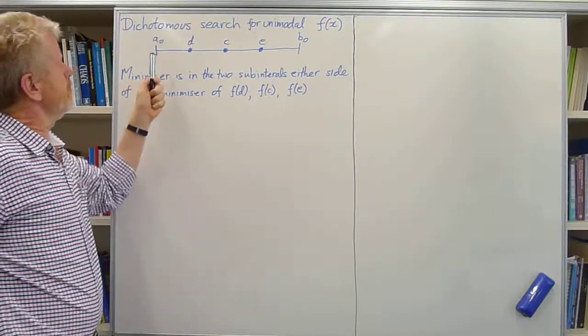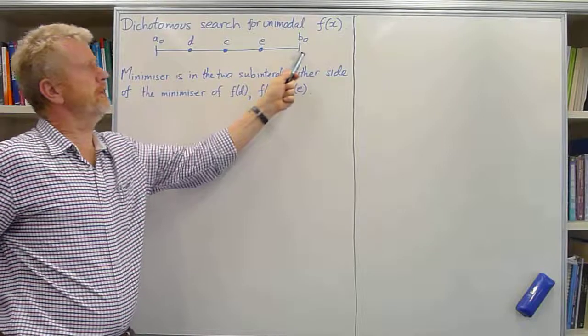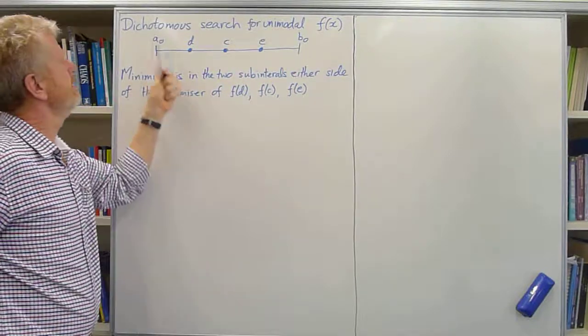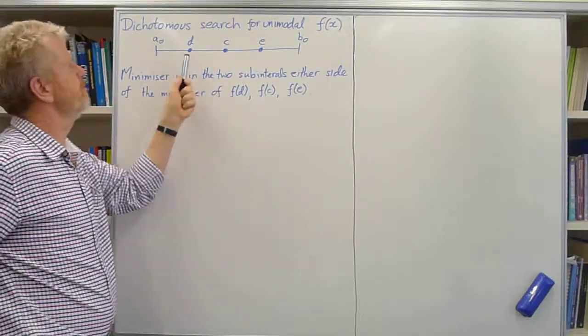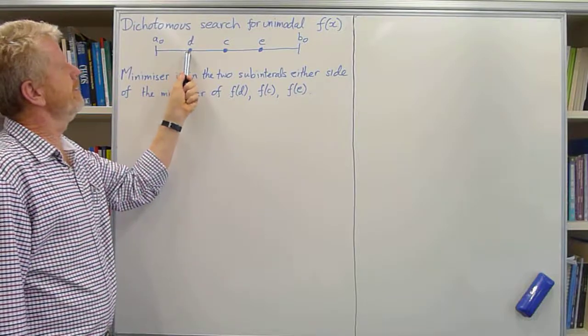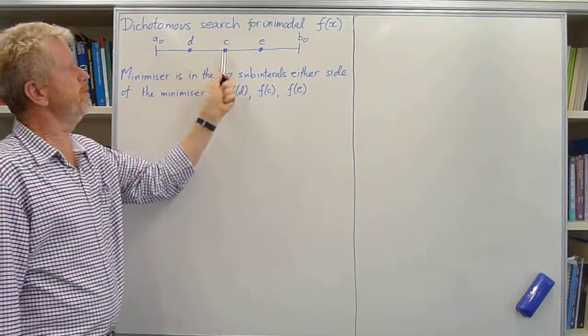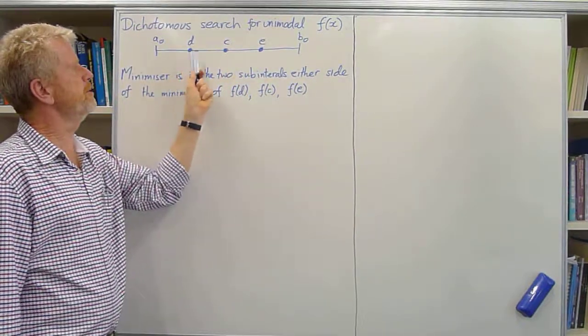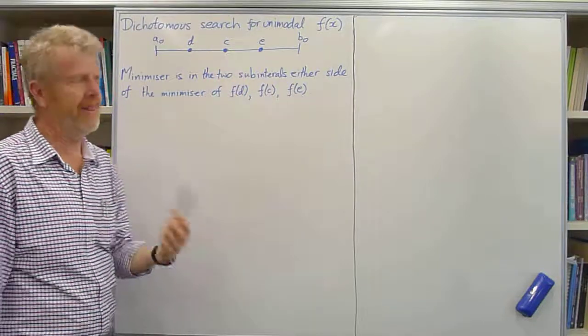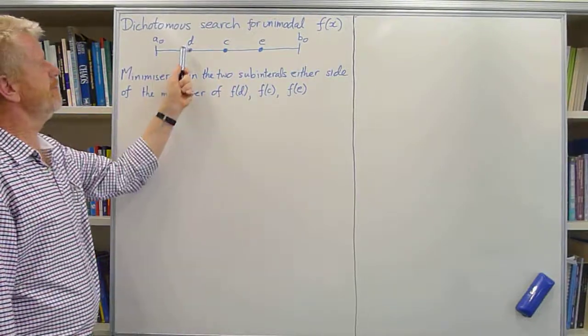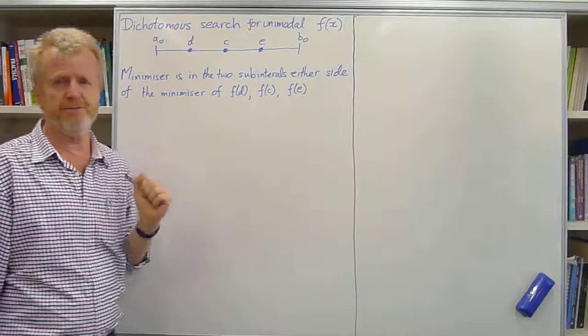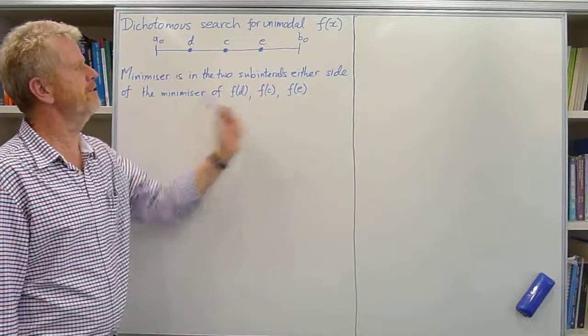I'll just remind you that if the interval is from a0 to b0, then in the dichotomous search what we do is divide that interval into four subintervals with three points called d, c, and e. And then we evaluate the function at these three points and get f of d, f of c, f of e.